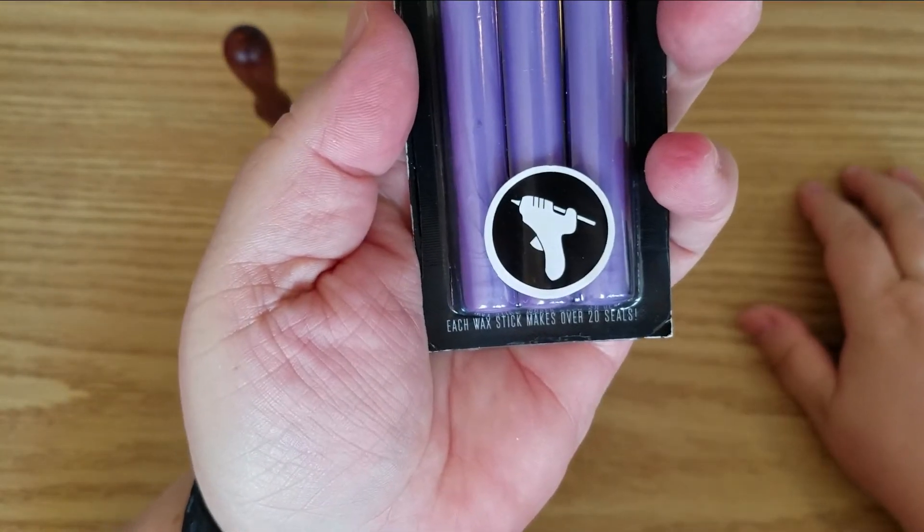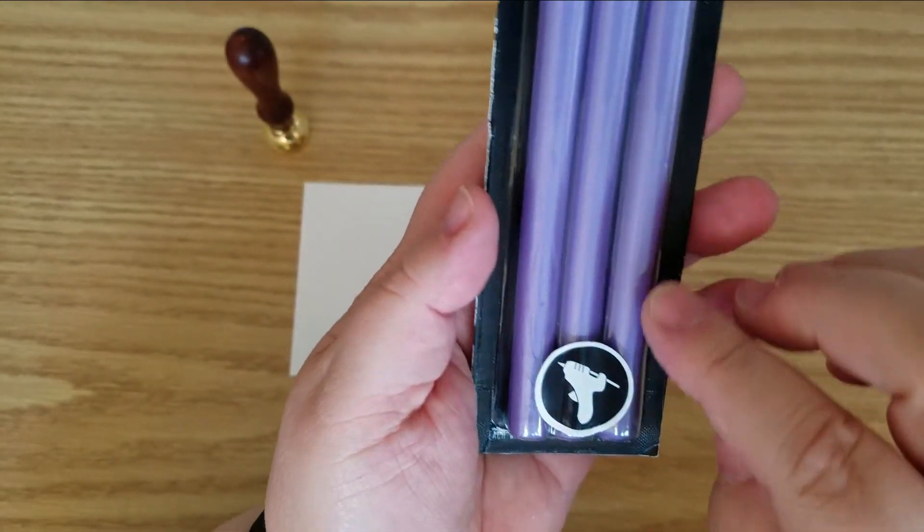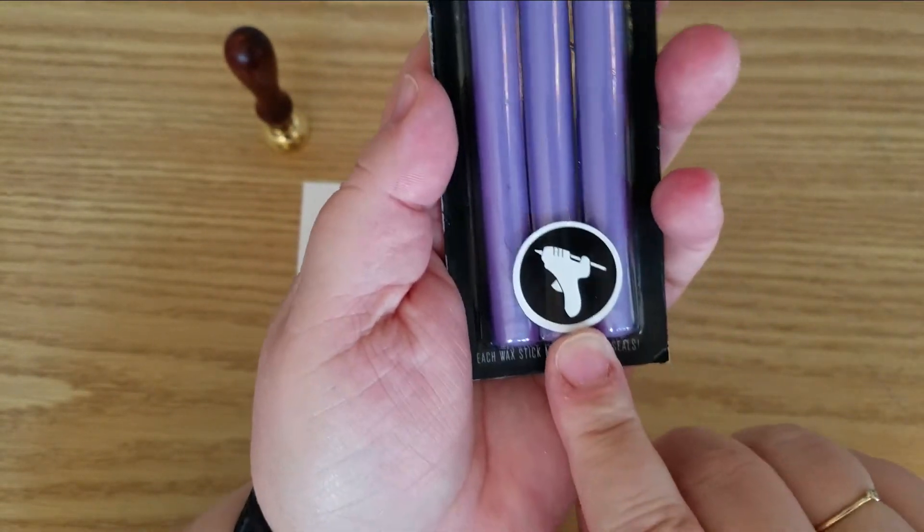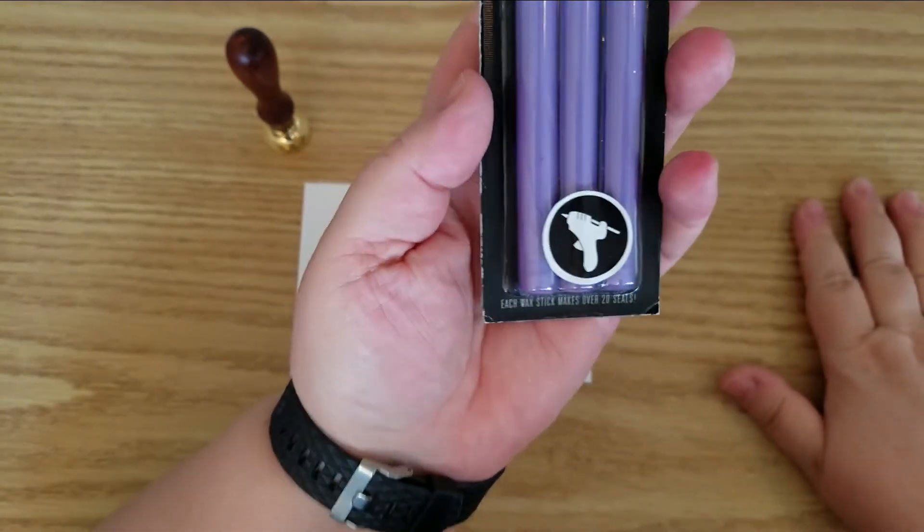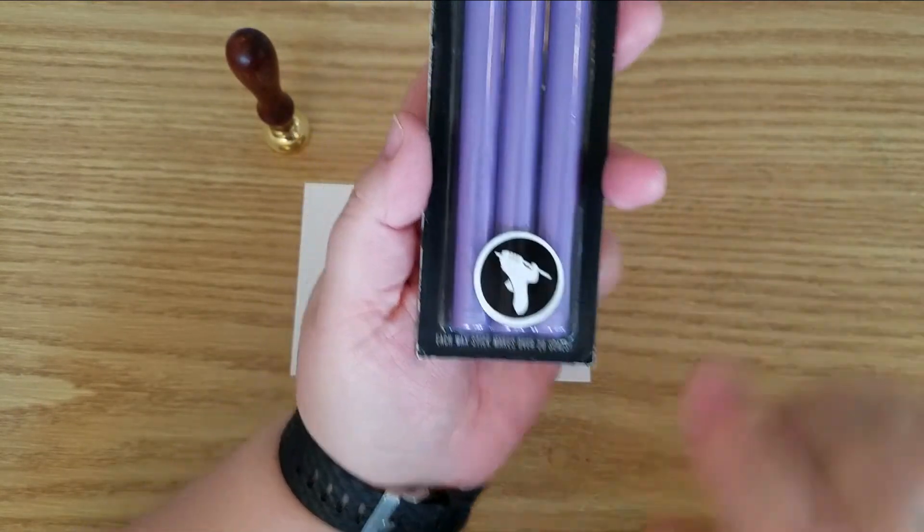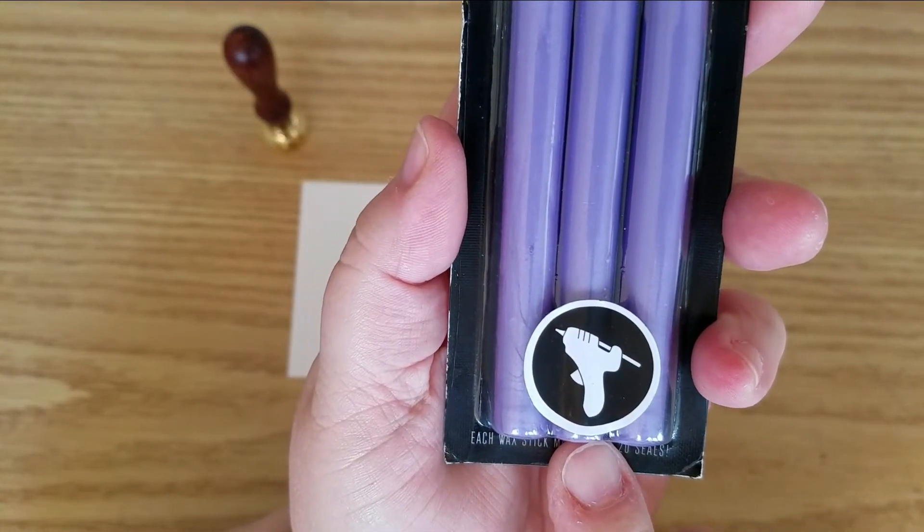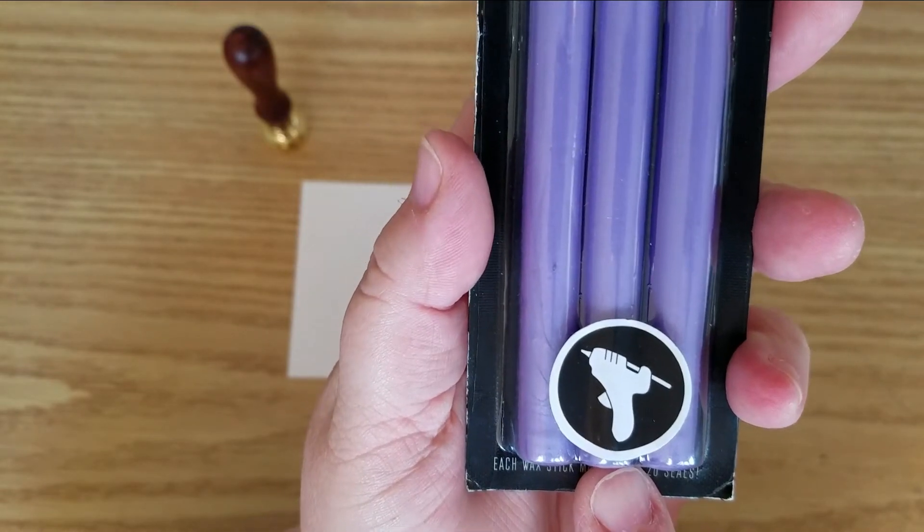That's a glue gun, not a hand holding something to stab somebody with. You're supposed to use these in a glue gun, not stab somebody. Oh my gosh, is anyone else, am I the only one that thinks that's what it looks like someone's trying to stab somebody with this?